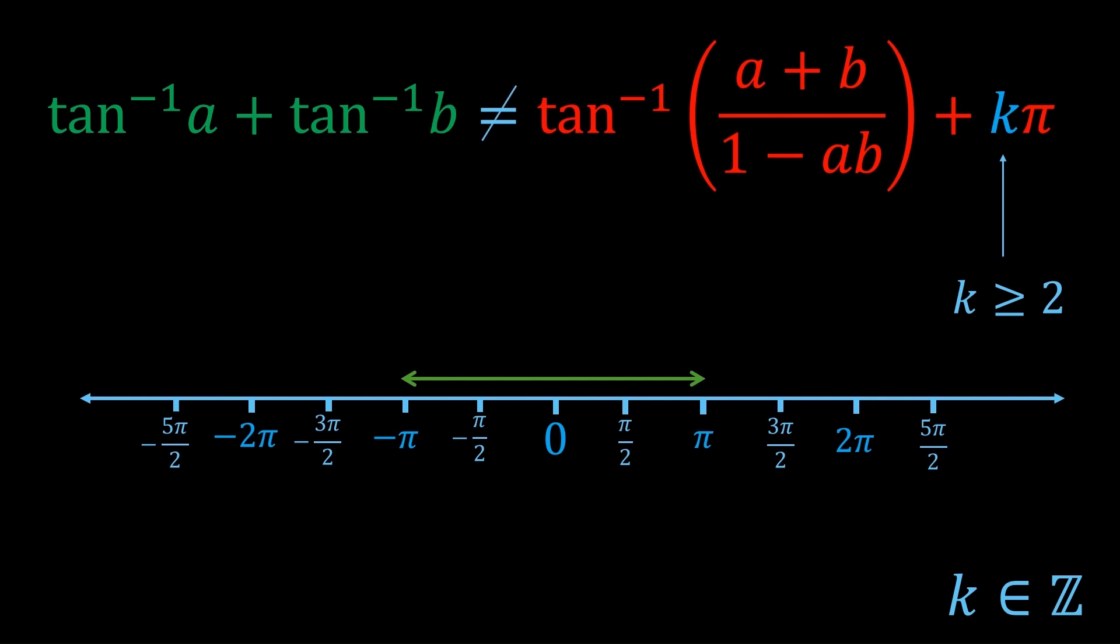You can apply the same idea for the negative side. So for k less than or equal to minus 2, it's also not going to be an equation. That means the only possible values of k are minus 1, 0, and 1.